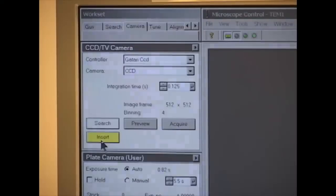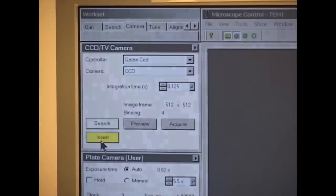To prepare another picture, go to the Microscope Control, Camera, and click Search. On the Digital Microscope screen, you will see a live image.